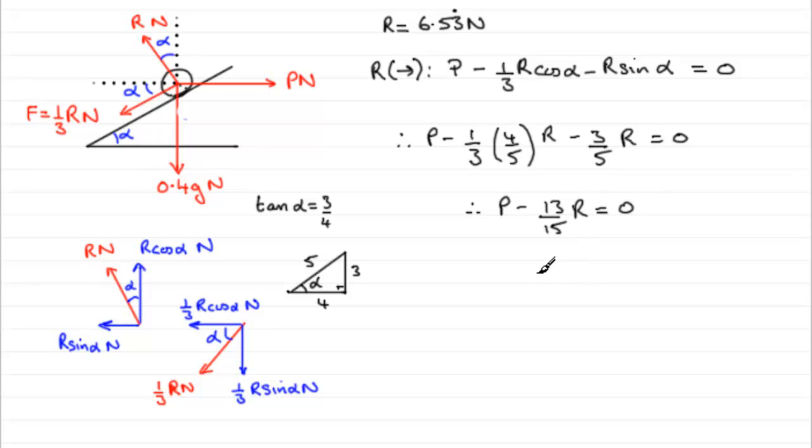Add thirteen fifteenths R to both sides, you then get P equals thirteen fifteenths of R. But at this point we know that R is six point five three recurring. We worked that out in the previous part. We could have substituted that in earlier, I know, but I've just decided to leave it till now. So we've got six point five three and so on in there.